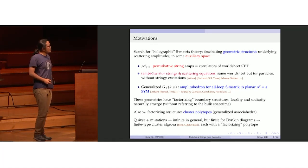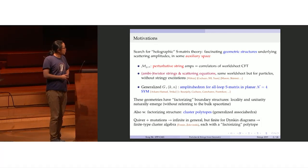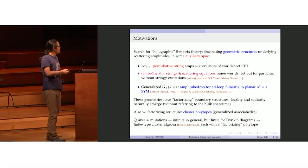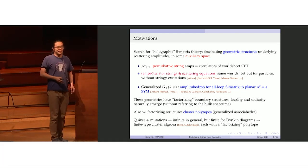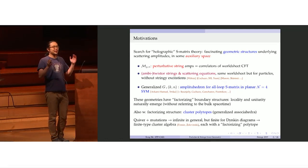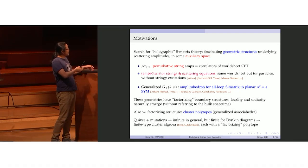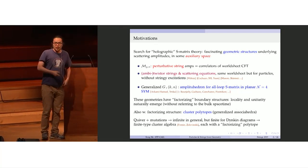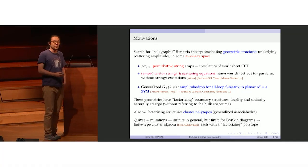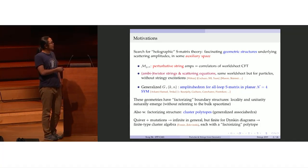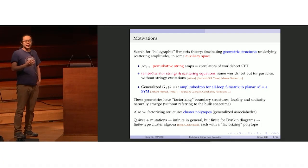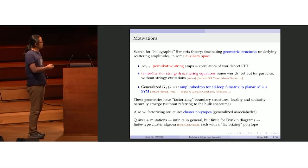There is yet another class of geometries that, to my best knowledge, haven't played a direct role in scattering amplitudes — the so-called cluster polytopes or generalized associahedra for finite type cluster algebras. If you have never heard about cluster algebras, here is a one-sentence explanation: you have a quiver diagram with cluster variables associated with them, and you mutate the quiver and variables according to some rules. In general you never stop and produce an infinite number of new variables, but if and only if the quiver is a Dynkin diagram, then you can stop and get a finite type cluster algebra. Each of them has a very nice factorizing polytope associated with it — this will be the star of the show today.